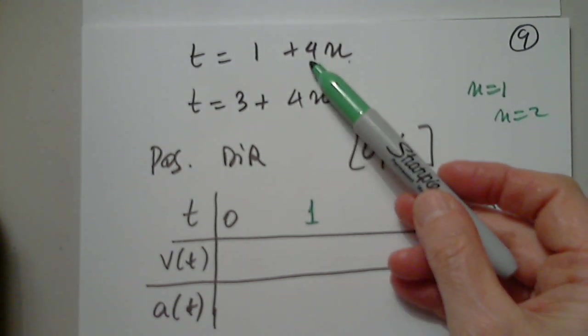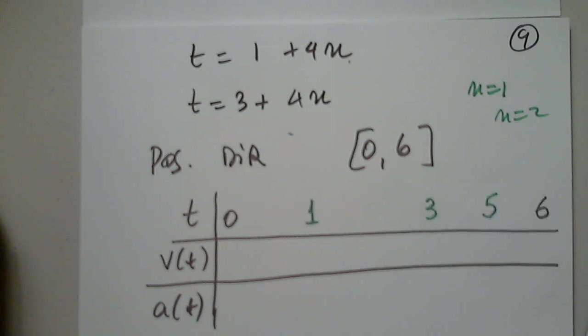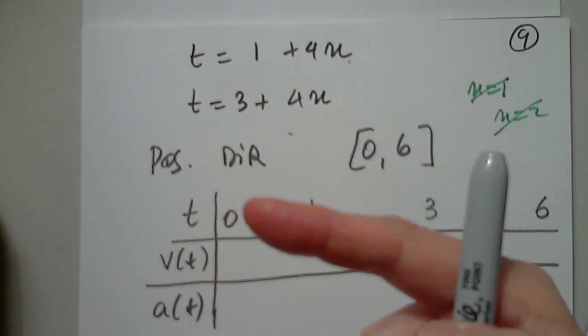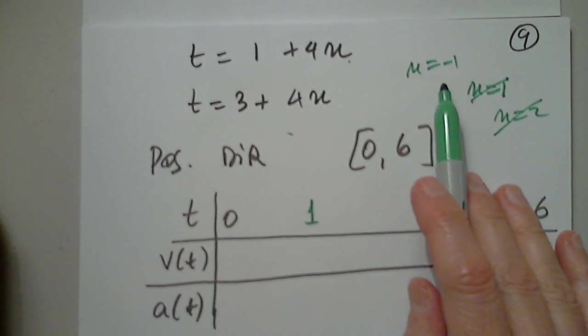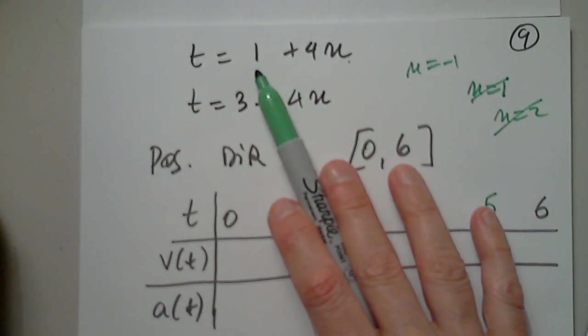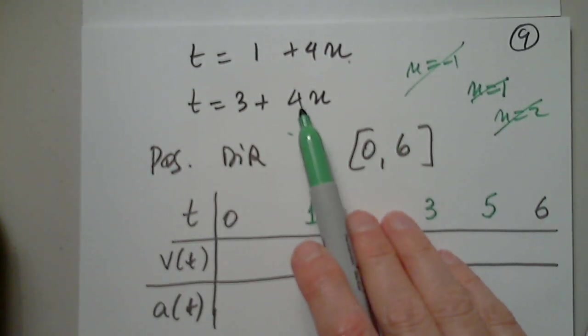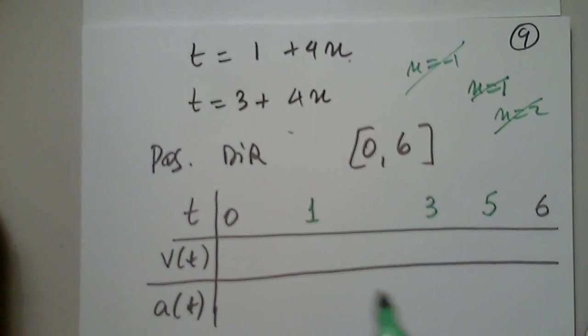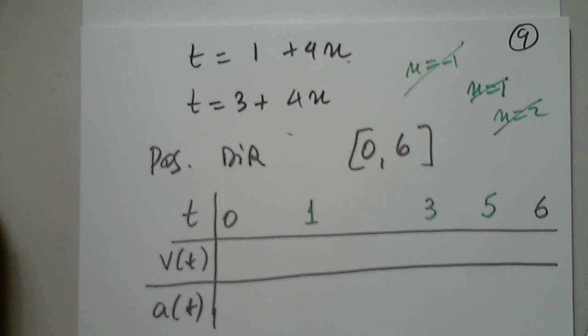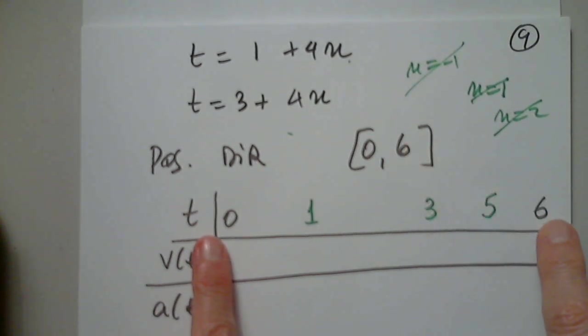Now when n equals 2, it's out. So I have to stop. But I also have to try negative 1. When n is negative 1, negative 4 plus 1 is negative 3, not possible. With negative 1, it's negative 4 plus 3, not possible. So I found all points. Is that clear so far? But it can't be 6 though either. But it doesn't matter. I have to study on the given interval.